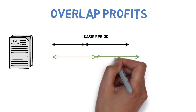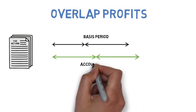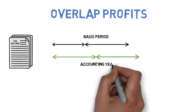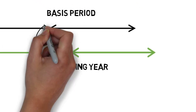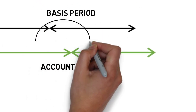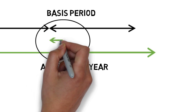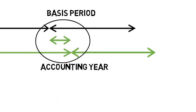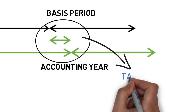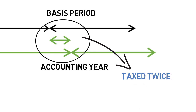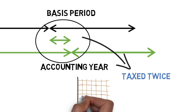During those early years, your basis periods won't necessarily match with your accounting year, and until they properly align you can experience some issues when it comes to paying tax. As a result, over the course of the first three years of trading you might have to pay tax twice on a proportion of your profits, which for a startup can be a source of significant cash flow issues.